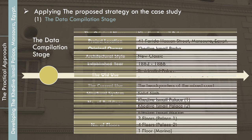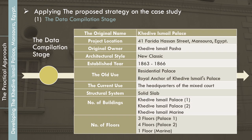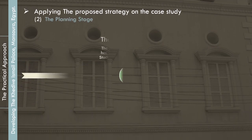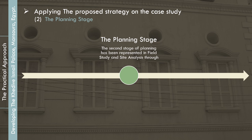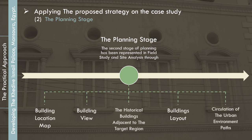By applying the proposed strategy to the case study, the first stage of data compilation has been abstracted in a table. The second stage of planning has been represented in a field study and site analysis through building location map, building view, the historical buildings adjacent to the target region, buildings layout, and circulation of the urban environment paths.